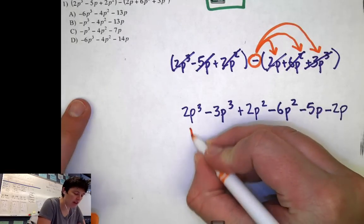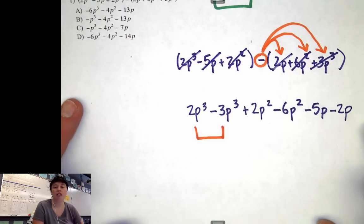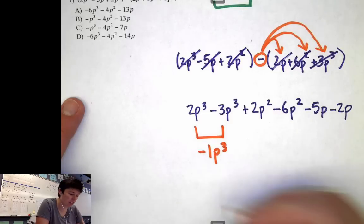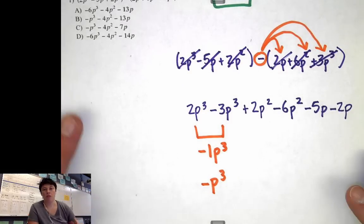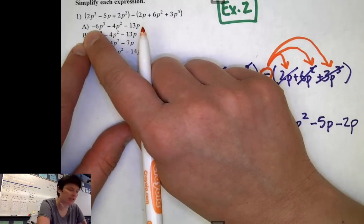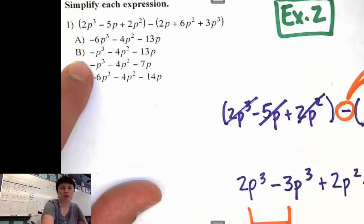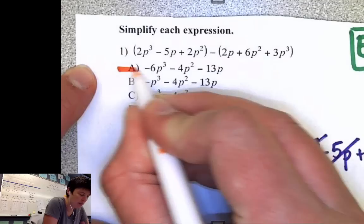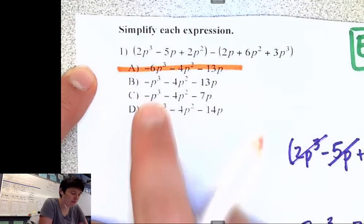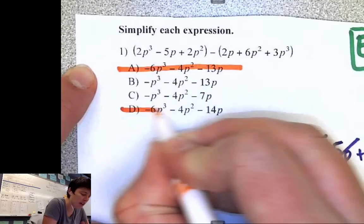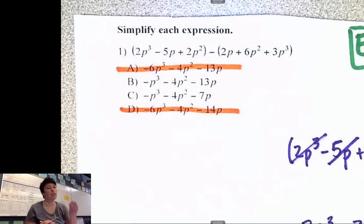Now let's combine like terms using our multiple choice strategies. 2p to the third minus 3p to the third: 2 take away 3 is negative 1, so we get negative p to the third. Looking at the answer choices: A has minus 6p to the third — eliminate it. B looks like it could work. C looks like an option. D has minus 6p to the third — eliminate it. So already I've narrowed it down to B or C, which means I've got at least a 50-50 shot.